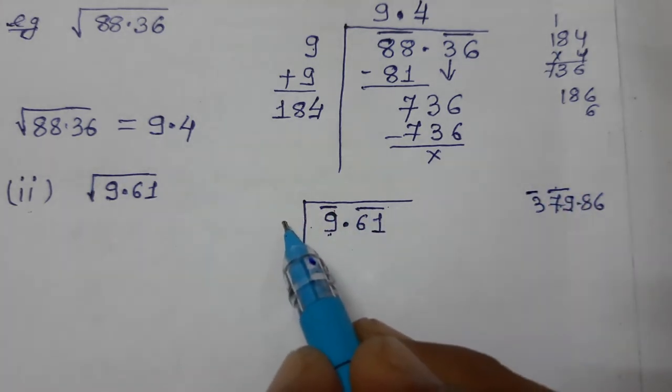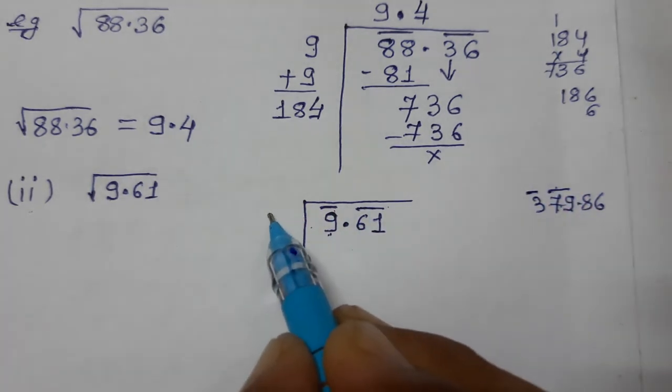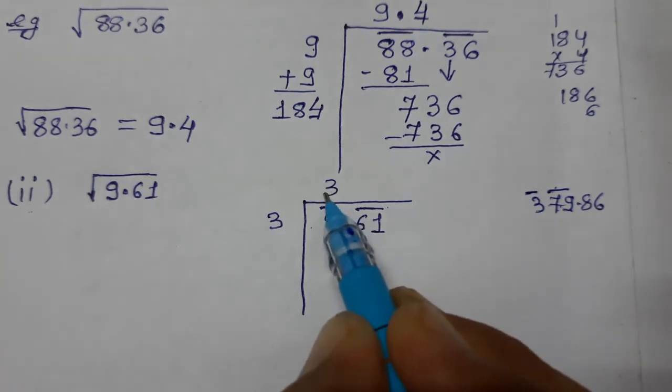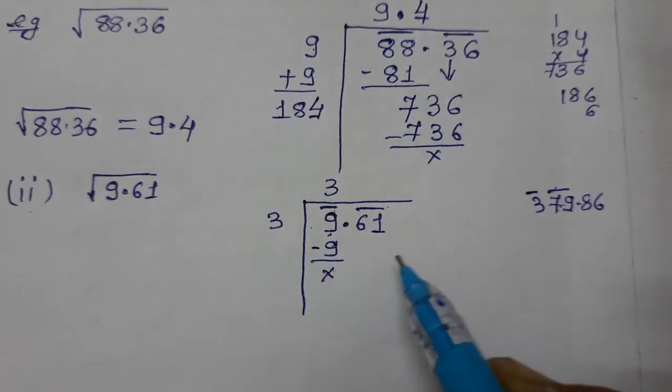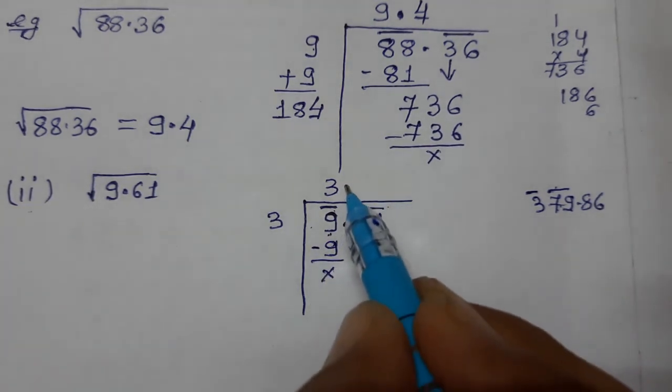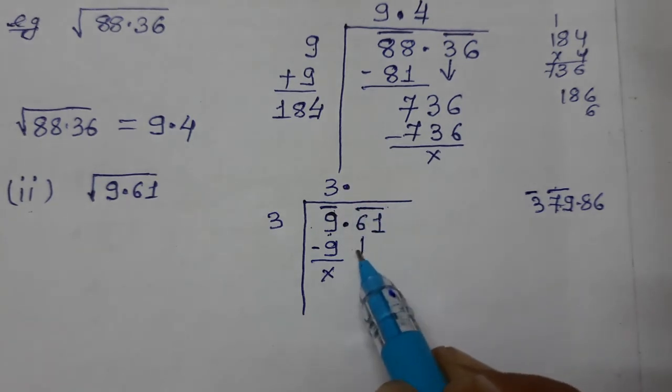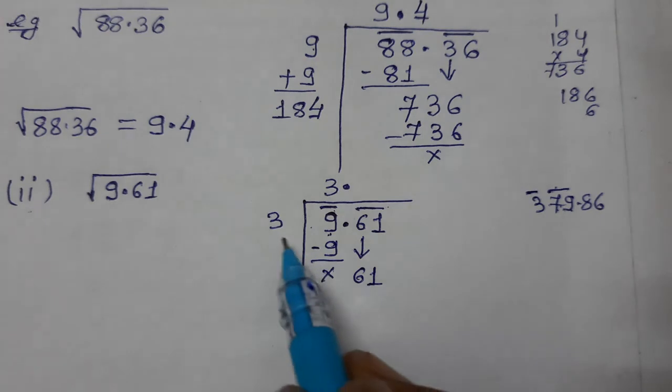Now you have to again search the number. 3×3 is 9, we know. And this is less than. When it comes to the number, then that number only we have to take. 9 minus 9, 0 cut. Decimal part we have to transfer. Now carry down 61 full. We have to put 61 full.